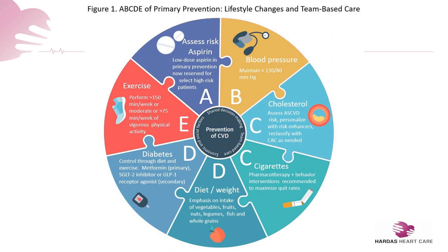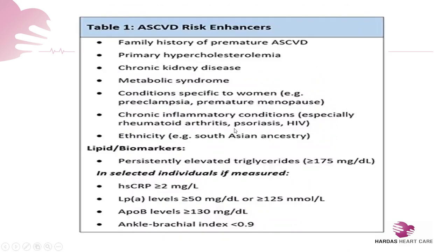There are certain risk enhancers to remember: a family history of premature ASCVD, primary hypercholesterolemia, kidney problems, and metabolic syndrome. A typical metabolic syndrome exists if you have a lot of truncal obesity, a short neck, are inactive, not exercising, snoring at night, and have blood pressures on the higher side with a possible abnormal lipid profile. Chronic inflammatory conditions can also make you prone to cardiovascular problems, and if you are from an Indian ethnic background, you definitely have a higher risk.